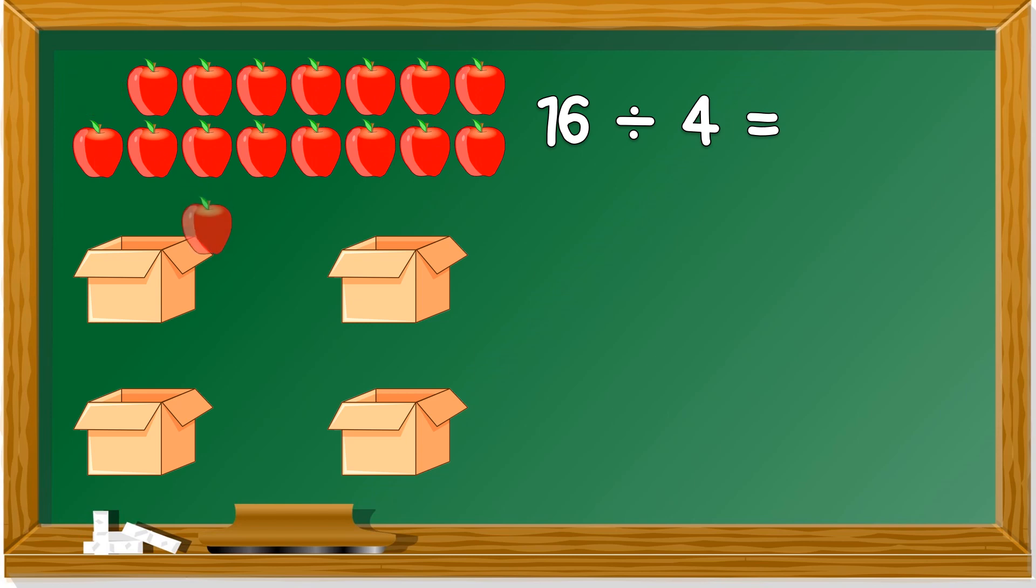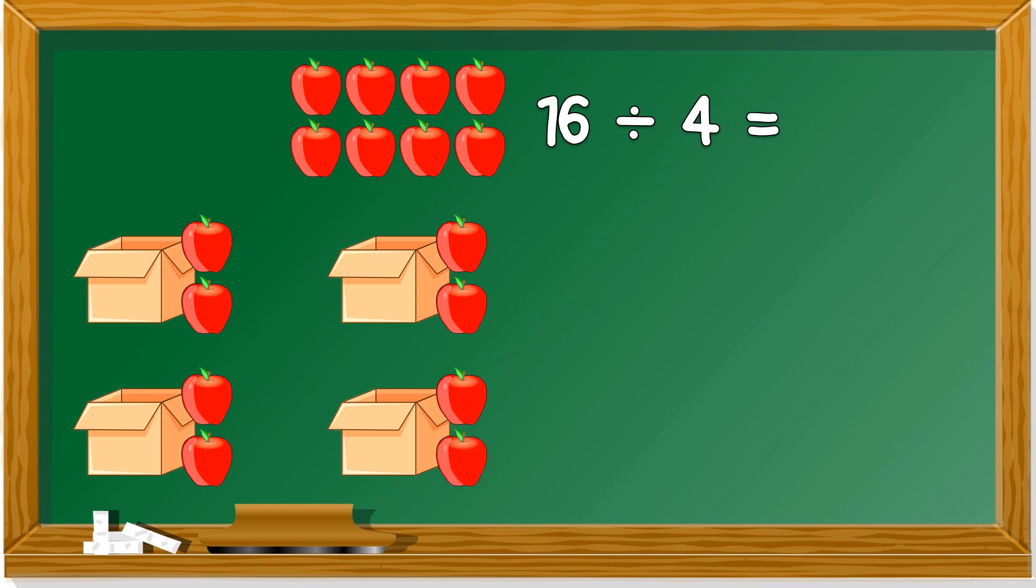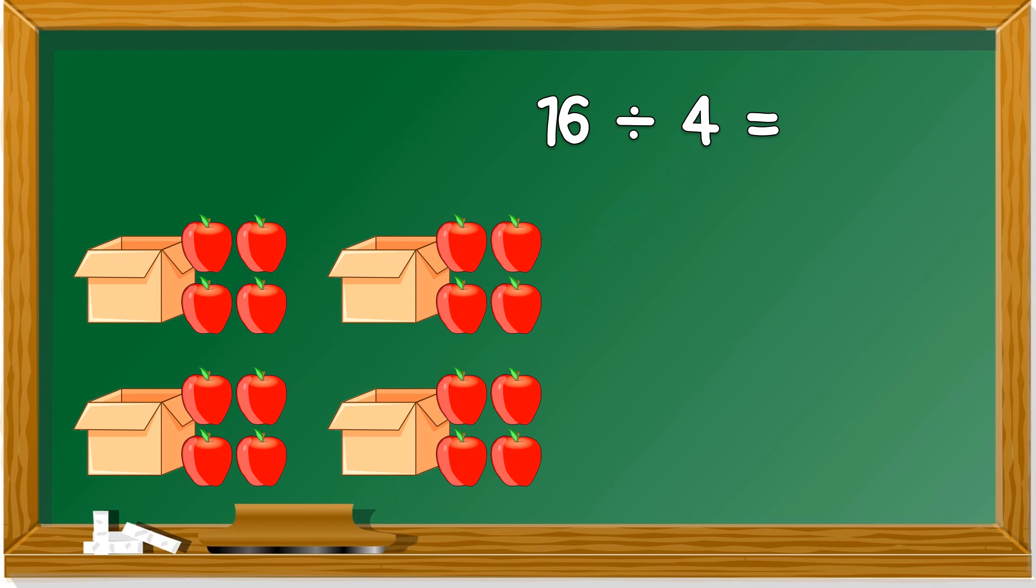How many apples just now? 16. So, it's 16 divided by 4. Let's divide. So 1 in each box. We return to box 1 again. Now there are 2 apples in each box. Let's do it again. Now, there are 3 apples in each box. Last round. We have how many more? 4 apples. Can 4 apples be divided into 4 boxes? Yes.